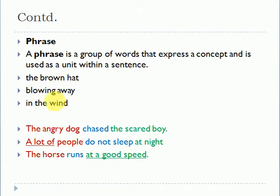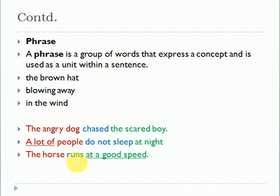In another example, 'the angry dog chased the scared boy' can be divided into three phrases: 'the angry dog' (a noun phrase), 'chased' (the verb phrase), and 'the scared boy' (an adjectival phrase). Further examples: 'a lot of people / do not sleep / at night' and 'the horse / runs / at a good speed' — you can distinguish distinct phrases within any sentence.